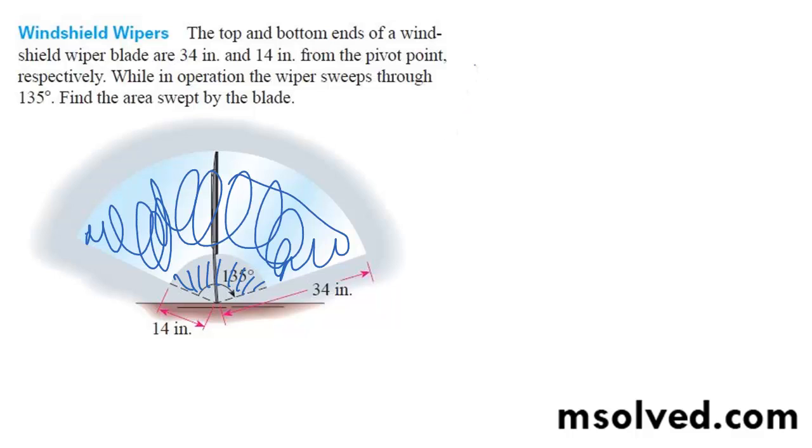So starting off here, to find each arc, I'm going to find the entire arc and then I'm going to subtract the smaller arc. And that will give me the wiped area.